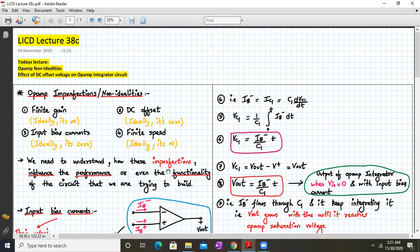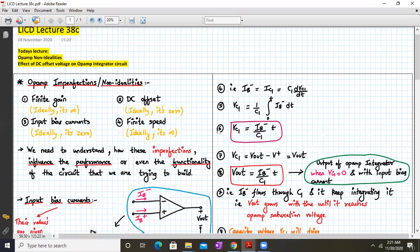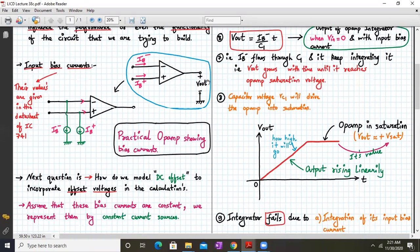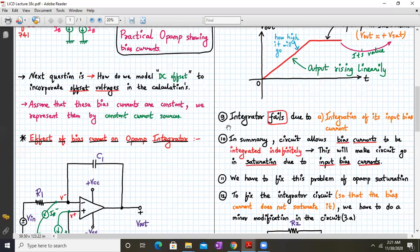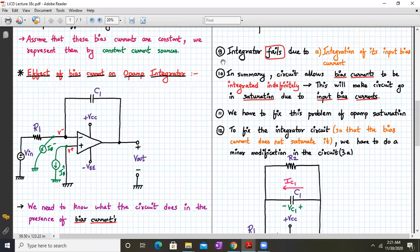Hello everyone, welcome to LICD lecture number 38c. Today we are going to discuss the effect of bias currents on the op-amp integrator circuit. Let's start with a little bit of background on input bias currents. They are modeled as constant current sources, since their value is almost constant.